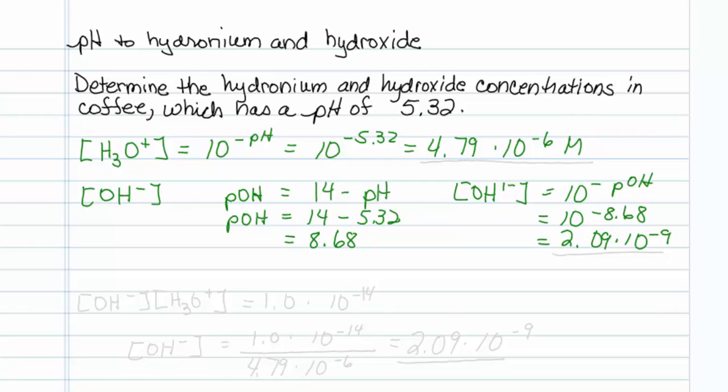But that's not the only way I can do this. Another way is to recognize that my hydroxide times my hydronium concentration in water is equal to the Kw of water, which is 1.0 times 10 to the minus 14.